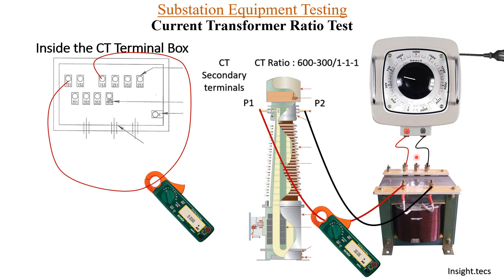Now let us check for higher amperes. We set the voltage using the variac to get 60 amperes on the primary side. With the CT connected on the 600/1 ratio, the secondary side shows 0.102 amperes. This confirms the test is working correctly, and this is how the CT ratio test is performed.